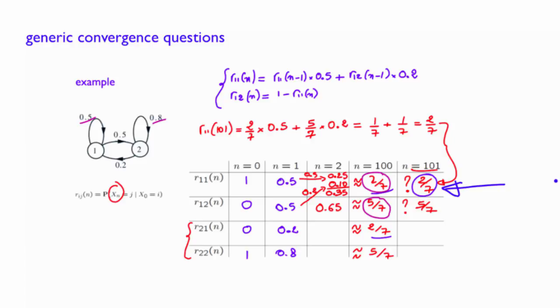In addition, if the Markov chain initially starts in state 2, the probability that it finds itself in state 1 after a long period of time also converges to the same constant value, 2 over 7.